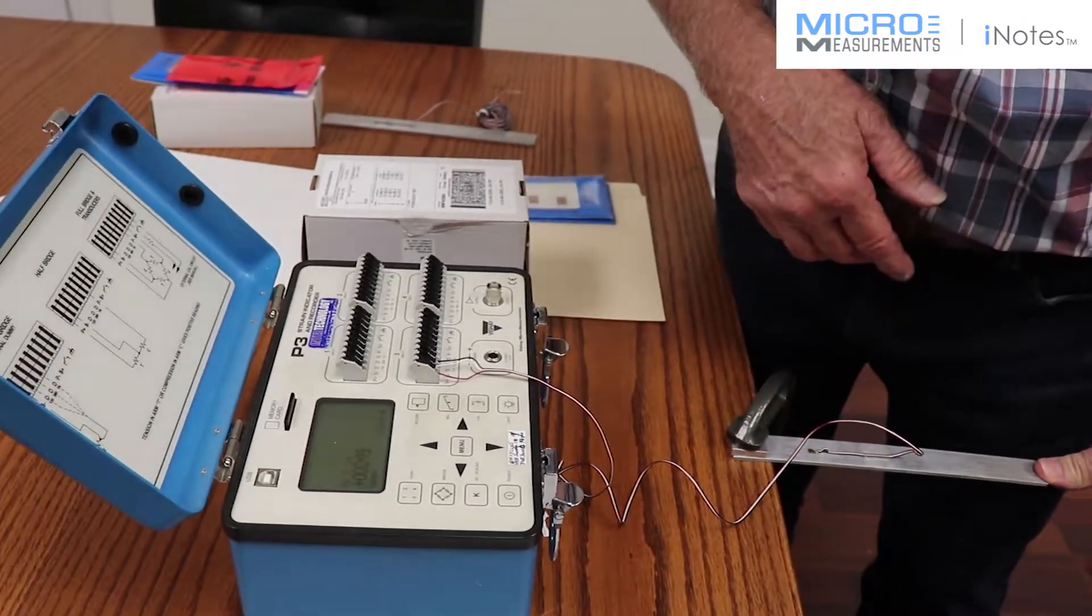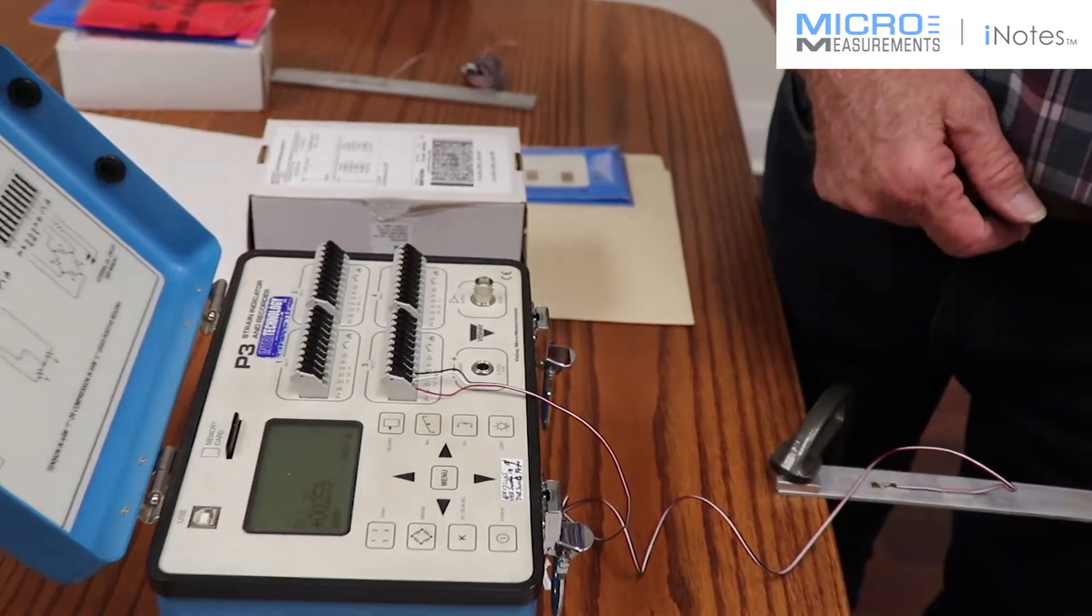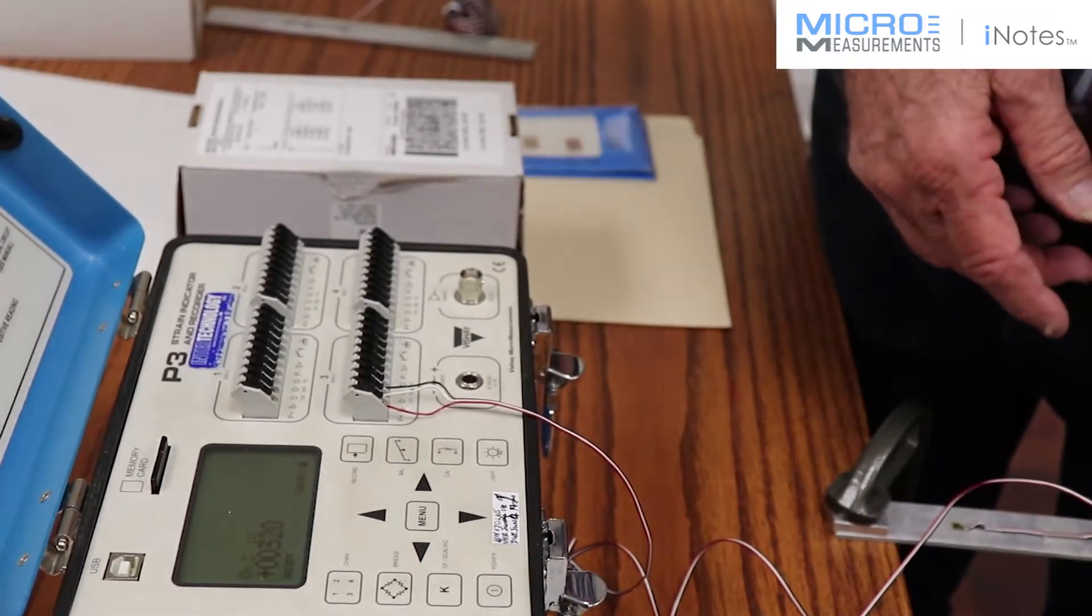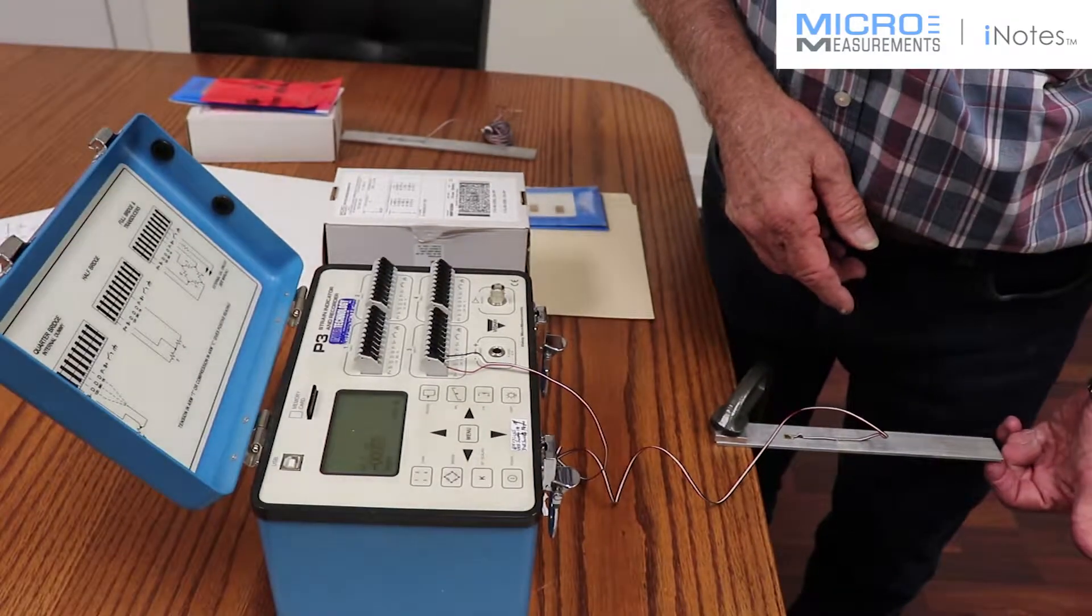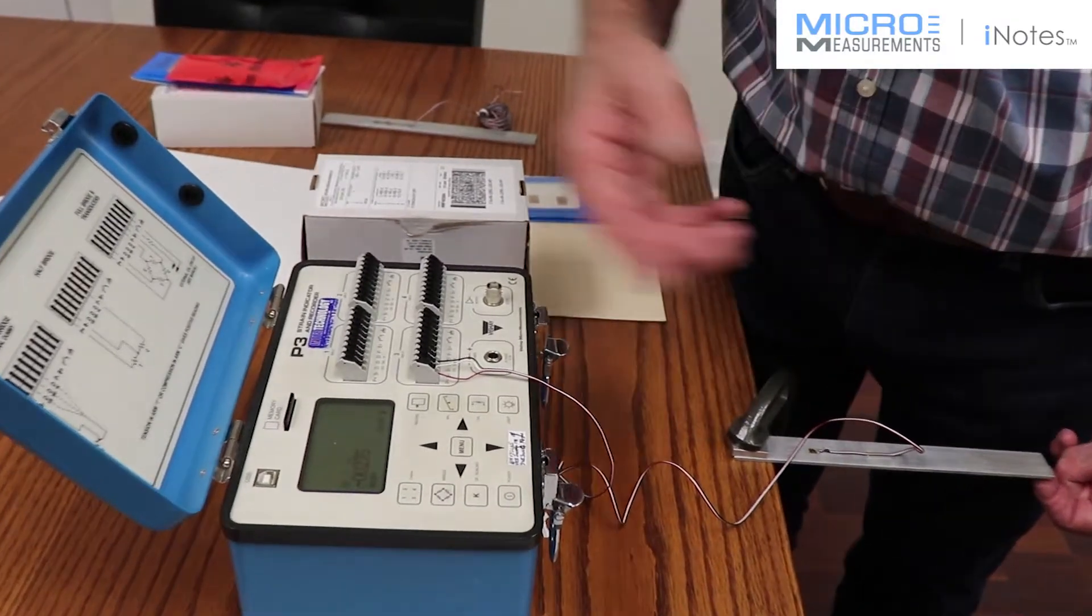If I press on the end of the cantilever beam, I'm putting strain on the gauge and getting a plus 300 micro strain. If I press from the bottom to give me a negative strain on the gauge, I'm getting a negative value.